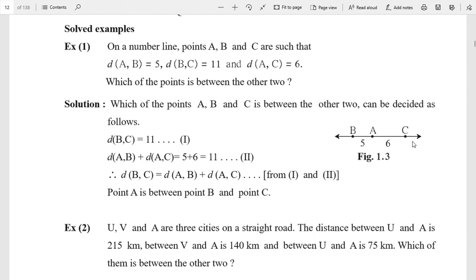Which one of the three points is between the other two? Point A is between point B and point C. That's the answer - point A is between B and C.